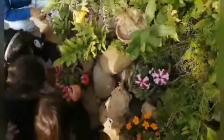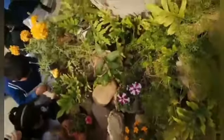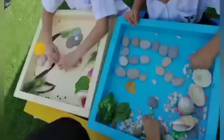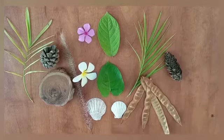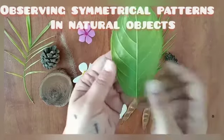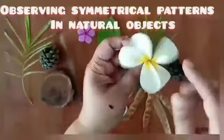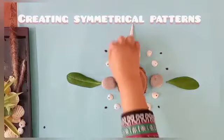By observing natural material closely, children recognize shapes and patterns in the environment. They can sort and match according to shape, size, color, weight and texture, and copy and create symmetrical patterns.